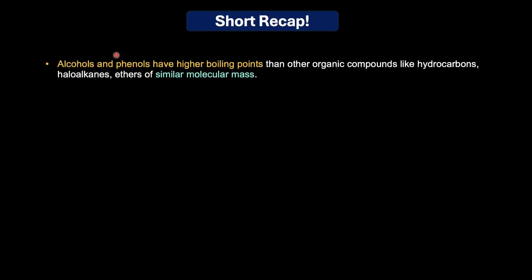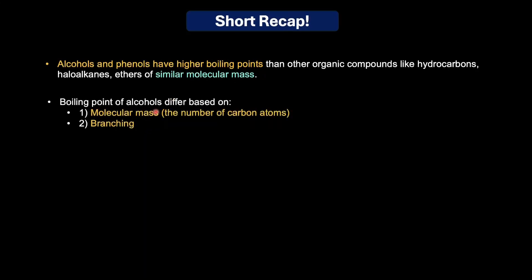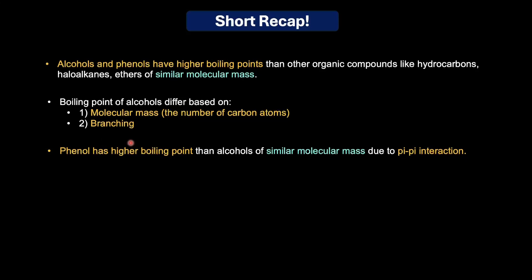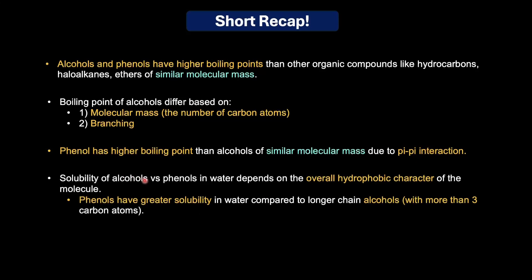To recap: alcohols and phenols have higher boiling points than other organic compounds like hydrocarbons, haloalkanes, or ethers of similar molecular mass. Among alcohols, boiling point is affected by molecular mass and branching. Phenol has a higher boiling point than alcohols of similar molecular mass due to pi-pi interaction. For solubility, phenols are less soluble than smaller alcohols like methanol and ethanol, but more soluble than longer-chain alcohols — especially those with more than three carbon atoms — because solubility depends on the overall hydrophobic character of the molecule.